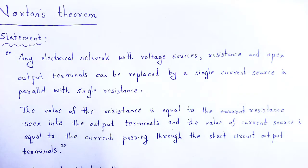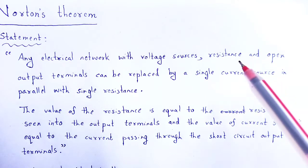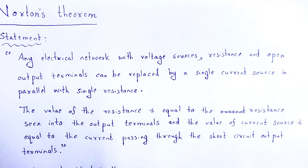In case of Thevenin's theorem, we found out Thevenin resistance and Thevenin voltage. All the equivalent resistances are treated as Thevenin resistance and the voltage source is treated as Thevenin's voltage, with voltage and resistance connected in series. But in case of Norton's theorem, that is just opposite — here we consider the current source and the resistance is in parallel with that current source, and we calculate the current through the load of that electrical circuit.